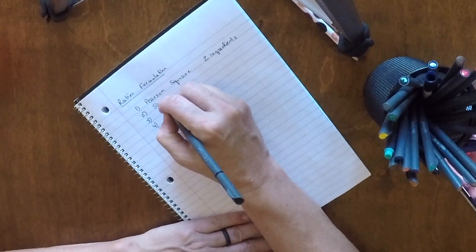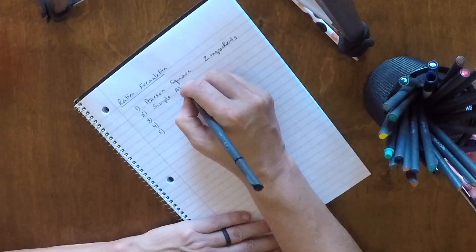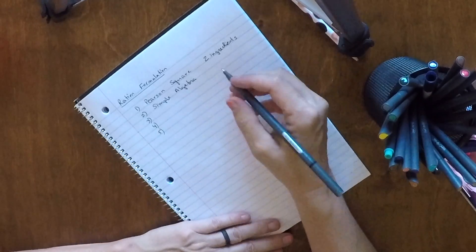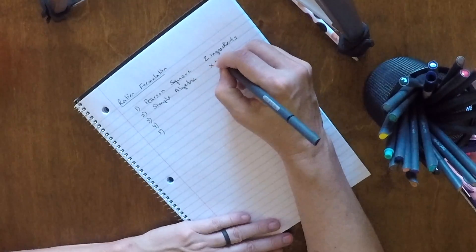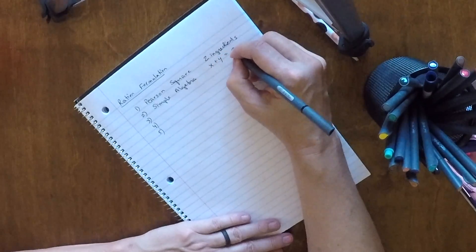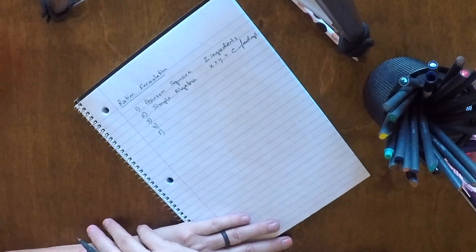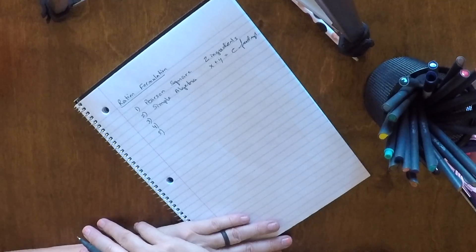The next method that we'll work with is simple algebra. And we'll start off with two ingredients. Literally, it's going to be the X plus Y equals C, which is our feed requirement. And so we're just going to be figuring out the amounts of unknowns and working with that.